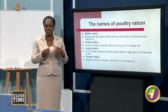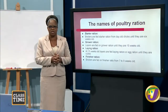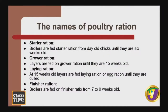The starter ration is given to broilers from day-old chicks until they are six weeks old. The grower ration is given to layers until they are 15 weeks old. The laying ration is given to layers from 15 weeks old until they are culled. The finisher ration is given to broilers from seven to nine weeks old, but here in Jamaica or the Caribbean, broilers are typically taken out at week five or six.